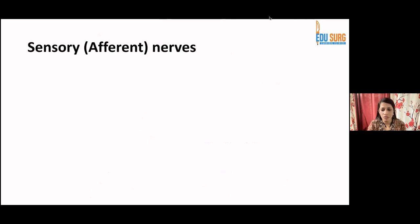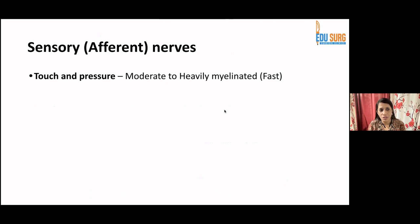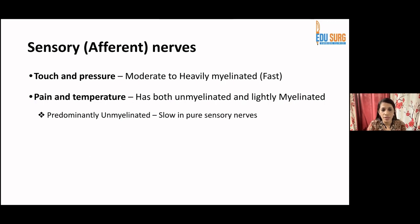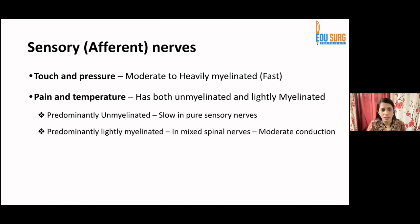For sensory or afferent nerves: touch and pressure — both light and deep — are conducted by moderate to heavily myelinated, fast nerve fibers. Pain and temperature have both unmyelinated and lightly myelinated fibers. Nerve fibers are classified as A, B, and C: A fibers are all myelinated, C fibers are unmyelinated, and B has both. A conducts fastest while C is slowest. Pain and temperature fibers are predominantly unmyelinated in pure sensory nerves and lightly myelinated in mixed nerves.